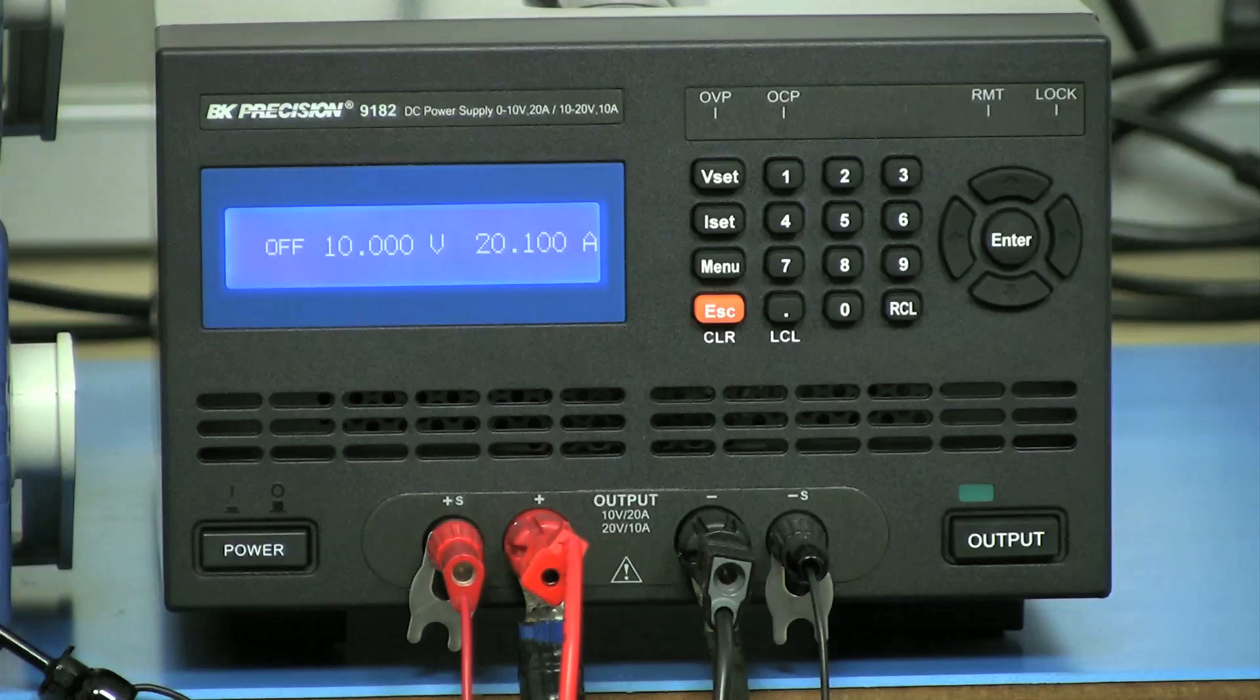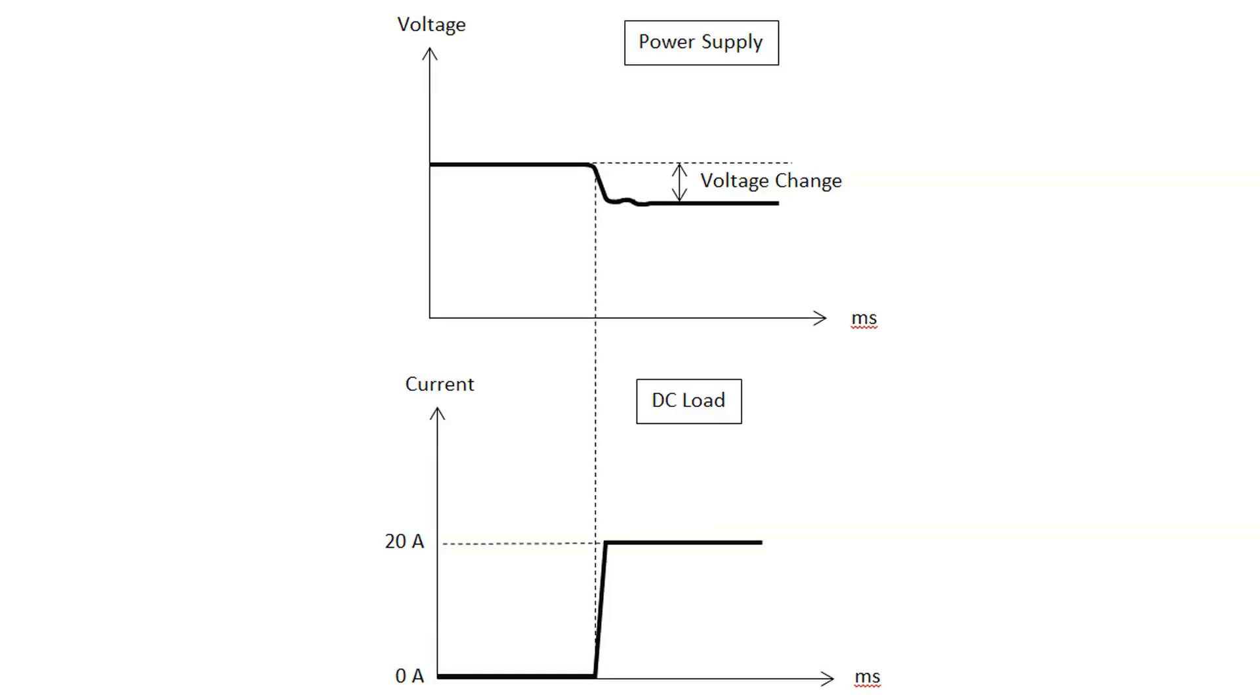With the 9182 being a constant voltage constant current power supply, I will show you how to measure load regulation in constant voltage operation. The measurement is done by measuring the change in output voltage from when there is no current load to the maximum rated current load. For the 9182, this change is from 0 amp to 20 amp.